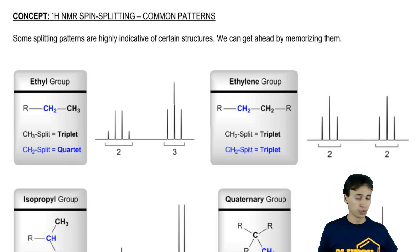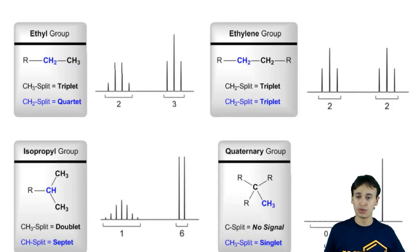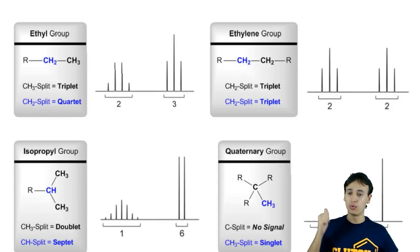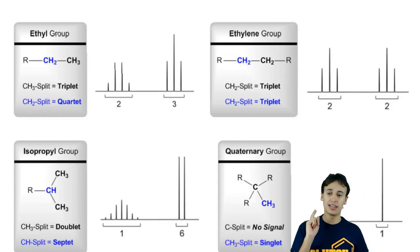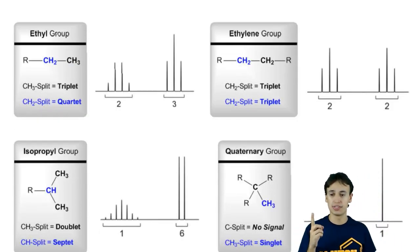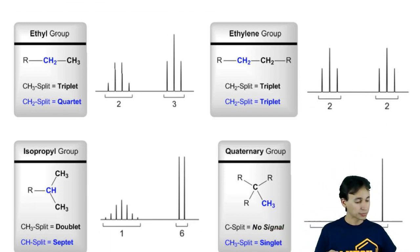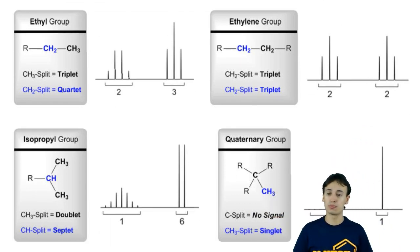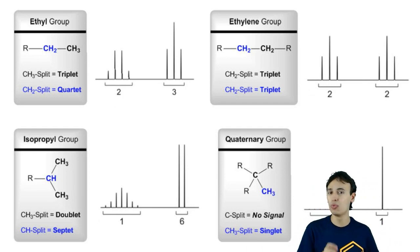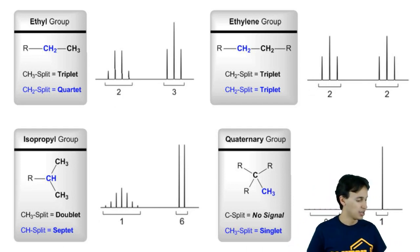Here are the four that we're going to discuss: what an ethyl group looks like, what an ethylene group looks like, isopropyl, and quaternary. Let's start off with ethyl, which is probably the most common — it's probably the one that your professor mentioned in class.